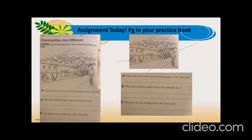Then the next question is about, what kind of jobs do you think they do? So if you could describe the geography, you'll be able to describe what kind of jobs this geography might produce. And then finally, the question is, what goods do you see being used in this community? Look at the goods that you see in the picture and write your answers and share your answers with us.